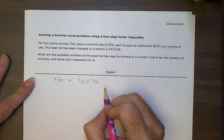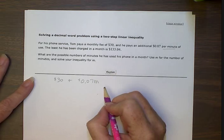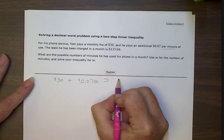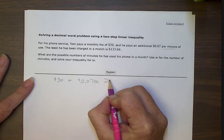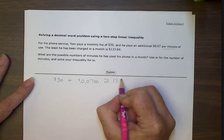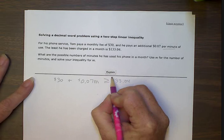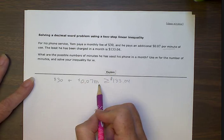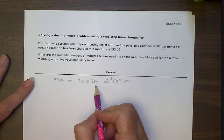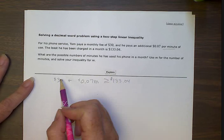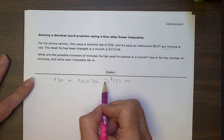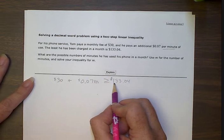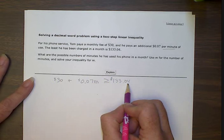And then it says the least he's been charged. Okay, so the least points to the small amount, which is $133.04. So his bill, this is his bill, is always at least this much or greater than. So this is why we're using a greater than or equals to sign. This side is the bigger side. This one is the smallest. That's why it said least. Least means smallest.